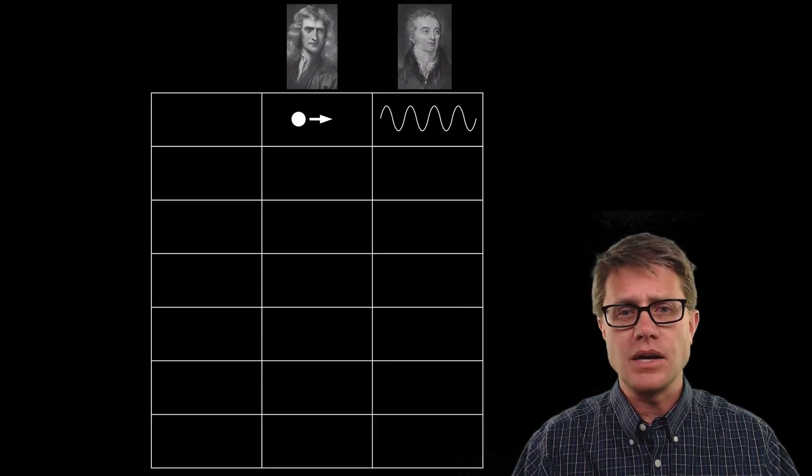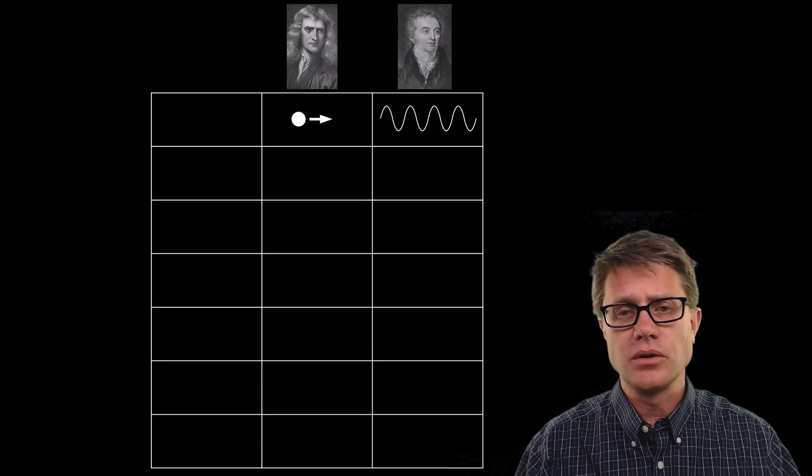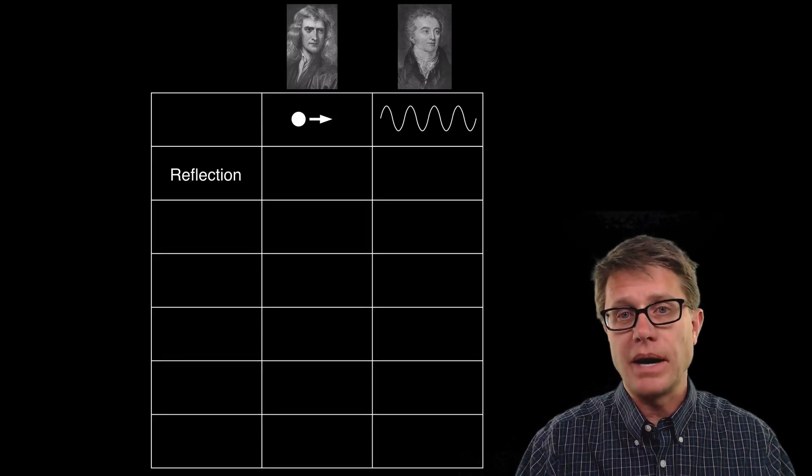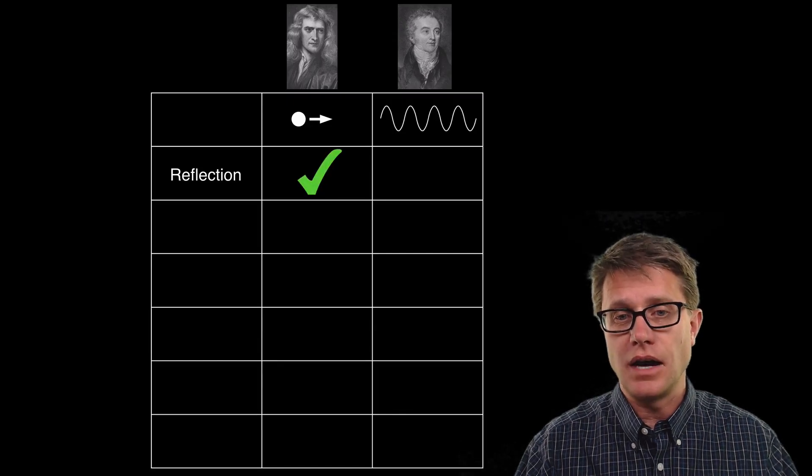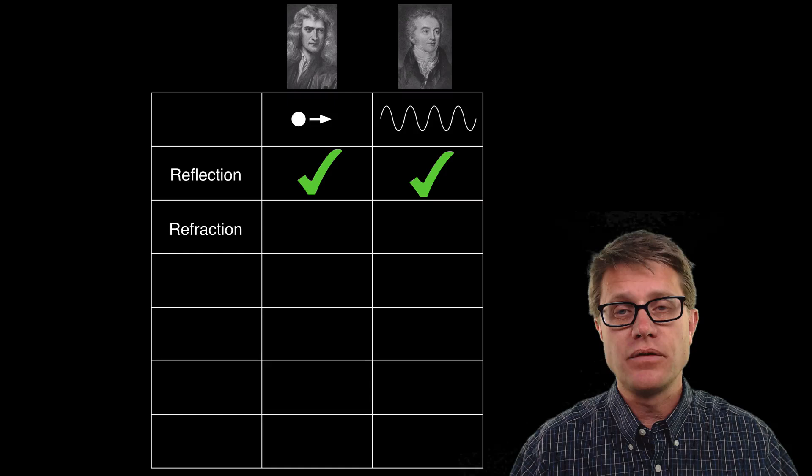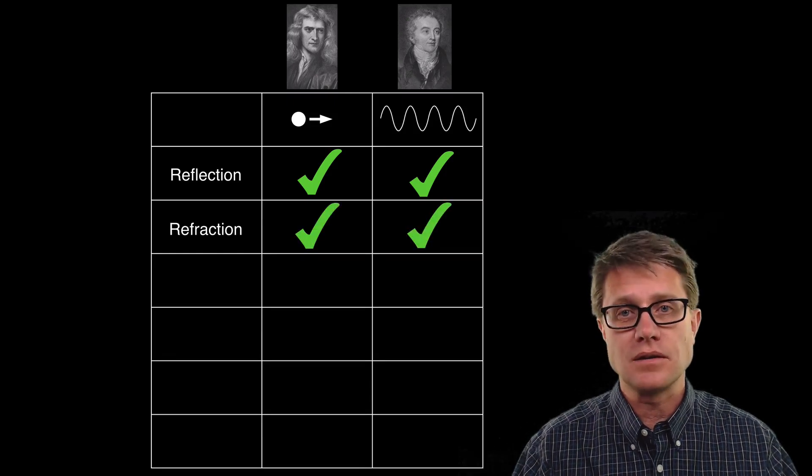And so if we kind of look at all of the evidence and go through those two, particle and wave model, we could first start with reflection. Do they bounce off objects? And we would say yes and yes. If we look at refraction, can they bend as they move from one medium to another? We would say yes and yes.